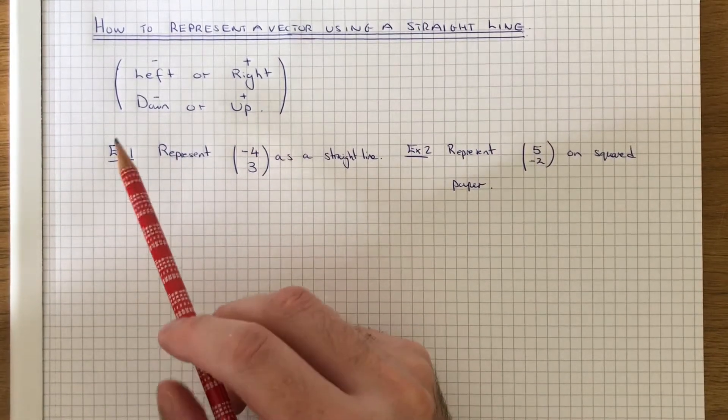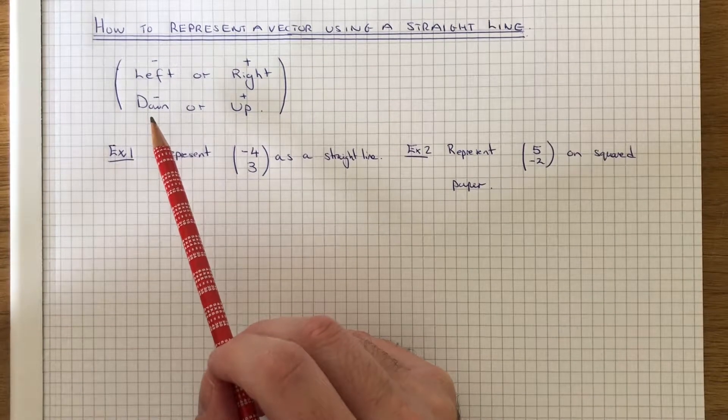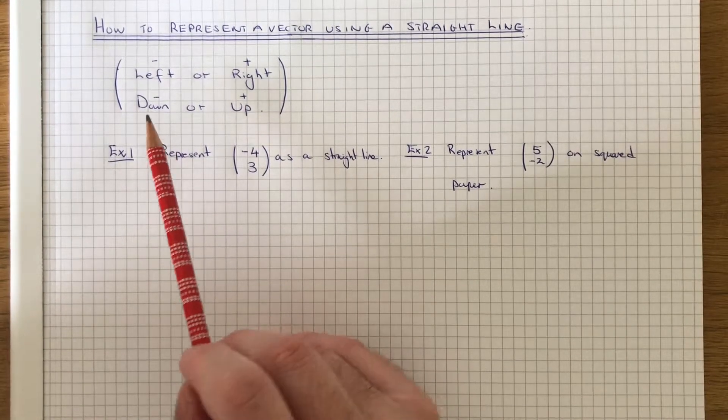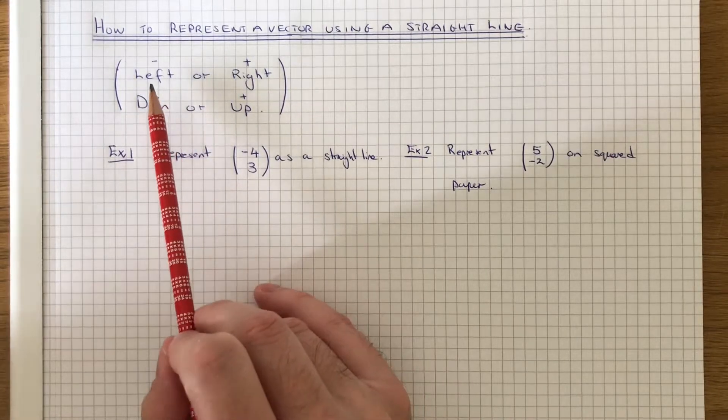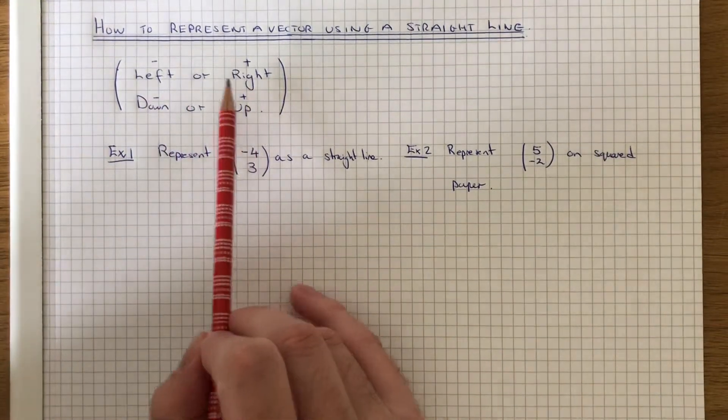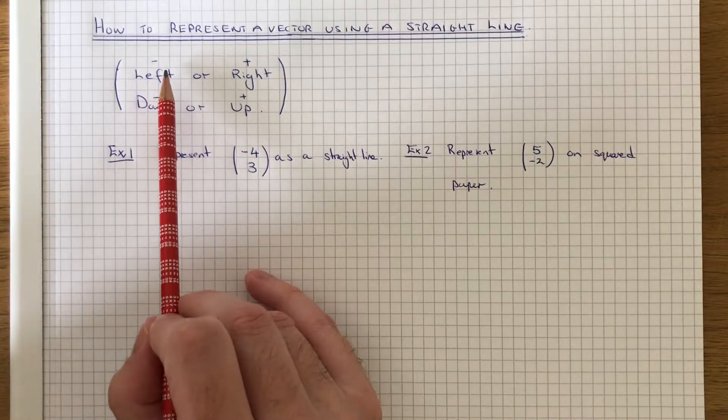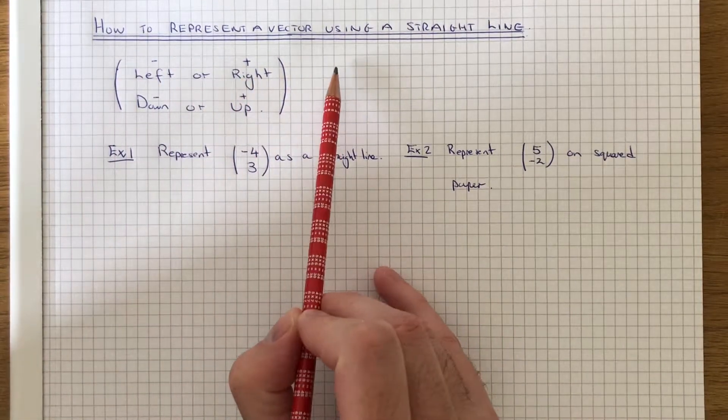First of all, you need to understand what directions you need to move your point in. The number at the top of the vector will tell you whether you move the point left or right. If it's a negative number, you move it to the left. If it's positive, you move it to the right.